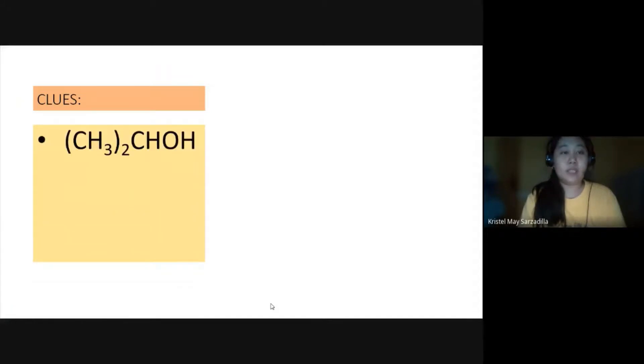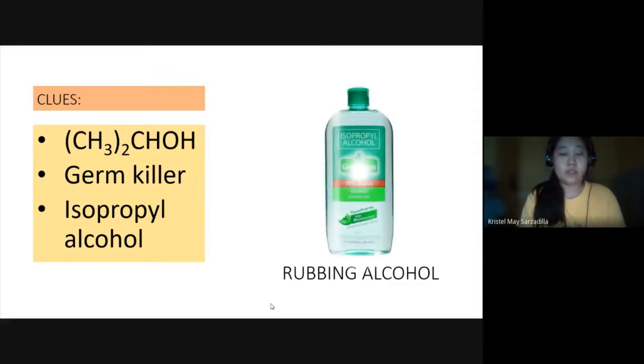Next we have CH3 quantity 2 CHOH. It's a germ killer. Its chemical name is isopropyl alcohol. Again, you're right. It's rubbing alcohol.